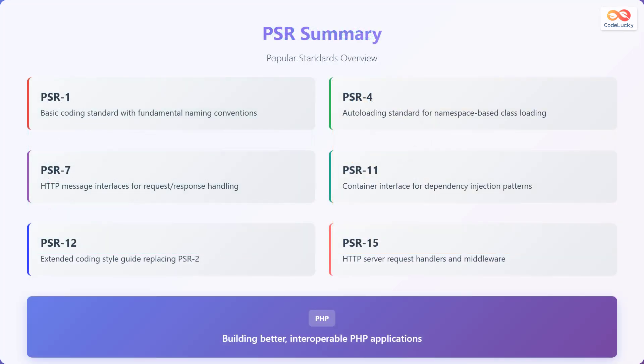Let's summarize the popular PSR standards we've explored. PSR1 provides the basic coding standard with fundamental naming conventions. PSR4 defines the autoloading standard for namespace-based class loading. PSR7 specifies the HTTP message interfaces for request and response handling. PSR11 outlines the container interface for dependency injection patterns. PSR12 is the extended coding style guide, replacing PSR2. And PSR15 defines the HTTP server request handlers and middleware. By adhering to these standards, we can build better, more interoperable PHP applications.